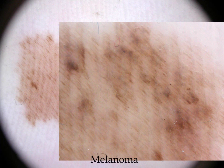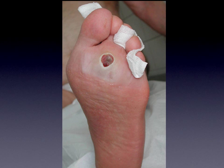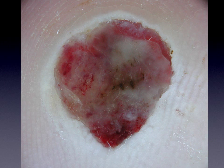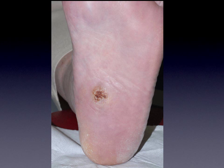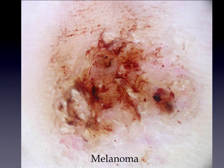It is important to remember that amelanotic acral melanomas can mimic any skin disease. Here you see more or less an ulcer, and also in dermoscopy you don't see many features of a melanoma — maybe some remnants of pigmentation and irregular vessels. It is important to do a biopsy in such a lesion; it turned out to be a melanoma. Another example looks like a verruca, and in dermoscopy you cannot see any specific parameter, so you should do a biopsy. This lesion was also an amelanotic acral melanoma.